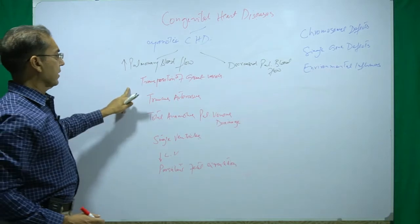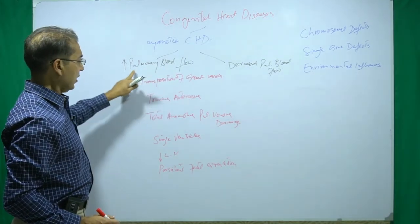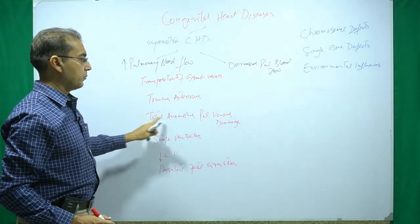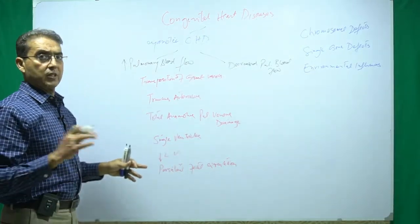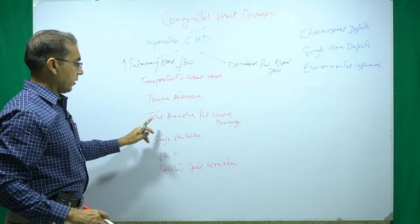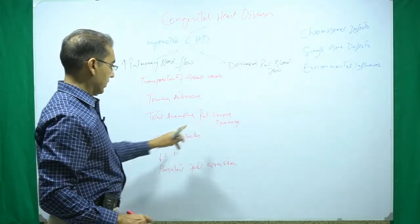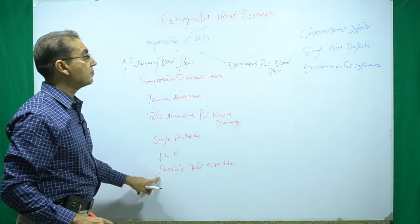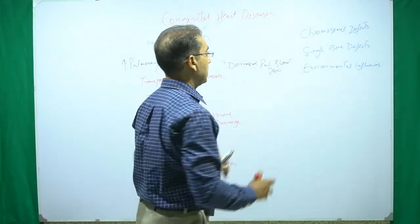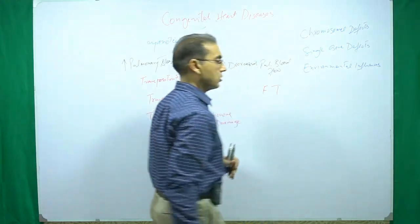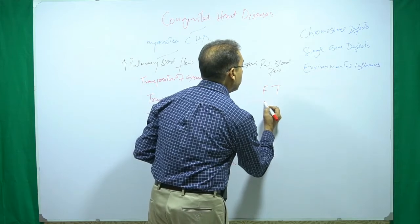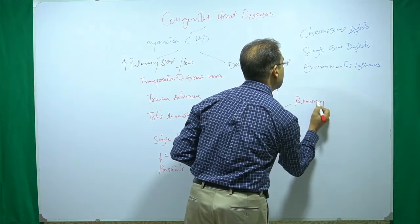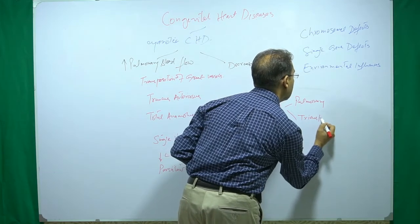On chest X-ray, these conditions show increased pulmonary blood flow, with plethoric pulmonary blood vessels. In total anomalous pulmonary venous drainage, the pulmonary veins drain to the right side instead of the left side. For those cyanotic conditions with diminished pulmonary blood flow, the classical example is tetralogy of Fallot. Others include pulmonary atresia, tricuspid atresia, and Ebstein anomaly.